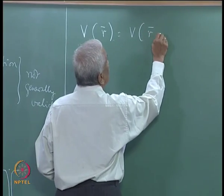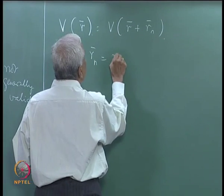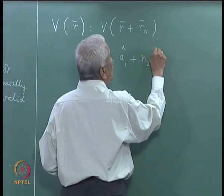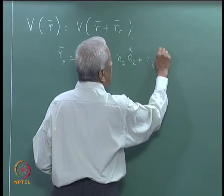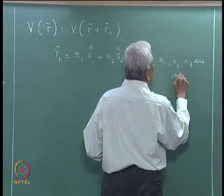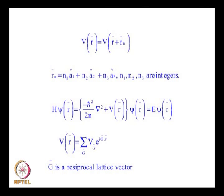In other words, V(r) equals V(r + Rn), where Rn is a general lattice vector: n1*a1 + n2*a2 + n3*a3, with n1, n2, n3 being integers and a1, a2, a3 being the basic lattice translation vectors. This is simply the condition of periodicity — the potential remains the same at any given lattice point and equals the value at any other lattice point given by position vector r + Rn.